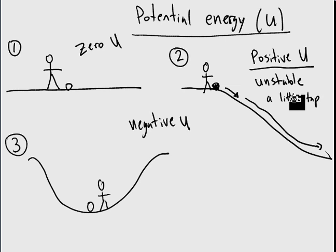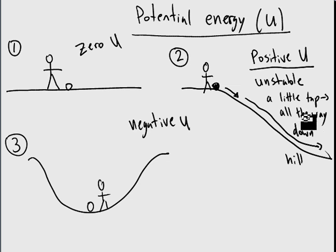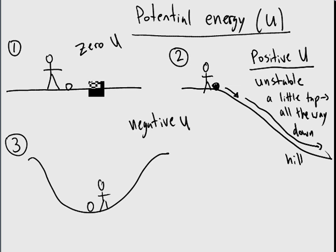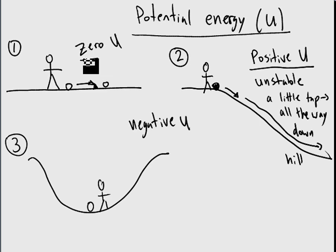A little tap will make it go all the way down the hill. The energy used to do that would be its potential energy, which would be converted to kinetic energy in our gravity example. For zero potential energy — number one — it's kind of you get what you paid for. You kick the ball, it'll go as far as the energy you give it takes it.